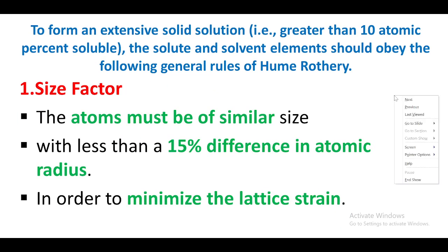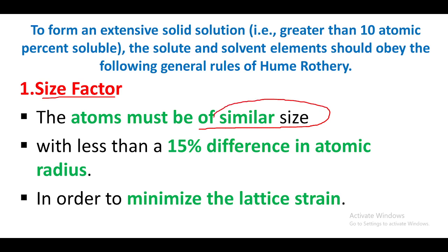The first rule is the size factor. The atoms must be of similar size. For example, copper and nickel — when these two materials are mixed, the atomic radius of both elements must be similar. The atom size difference should be below 15 percent.